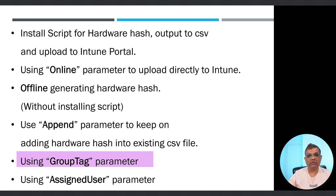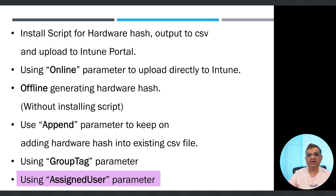Finally, I'm going to show the assigned user parameter, where you can assign the Autopilot hardware hash device information to a specific deployment profile along with assigning it to a specific user. So let's begin.